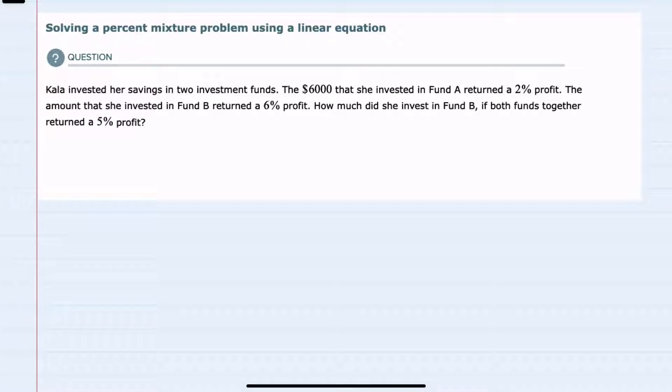We're told that Kayla invests her savings in two investment funds. $6,000 is invested in Fund A that returns a 2% profit. The amount she invests in Fund B returns a 6% profit. Notice we don't know what that amount is, and her total profit is 5%.